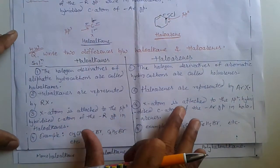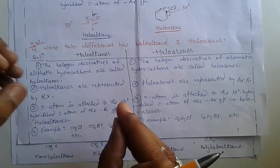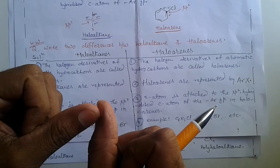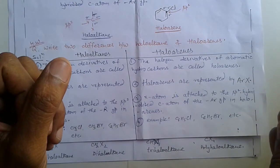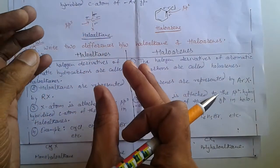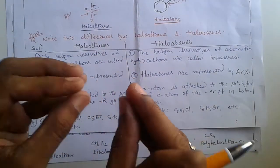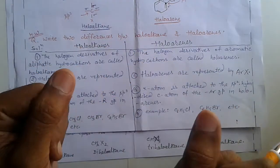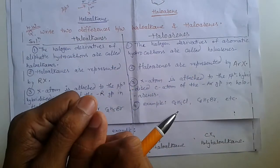Third difference between Halo Alkane and Halo Arene: in Halo Alkane, the halogen atom is attached to the sp3 hybridized carbon atom. In Halo Arene, the halogen atom is attached to the sp2 hybridized carbon atom. Examples of Halo Alkanes: methyl chloride, methyl bromide, ethyl bromide. Examples of Halo Arenes: chlorobenzene, bromobenzene, iodobenzene.